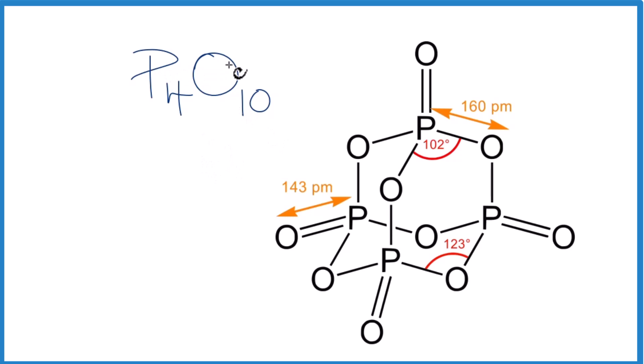What we can do, we know that oxygen is always going to have a negative 2 oxidation number. And the phosphorus, we don't know what that is. We'll call that X.